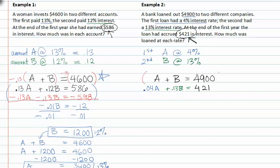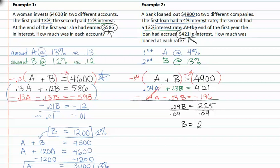I need to clear one of my variables to solve for the other, and so I'm going to multiply both sides of my equation by negative .04. When I do this, I get negative .04 A minus .04 B is equal to negative $196. From here, I can drop my A's out because they add to zero, and my B terms add to .09 B equal to 225. Now I just divide by .09 on both sides, and I get B is equal to 2,500.